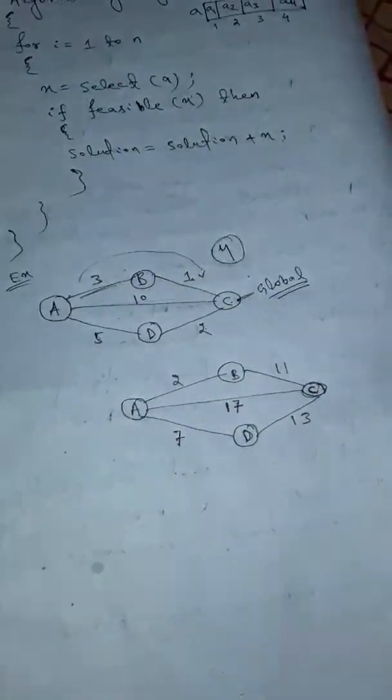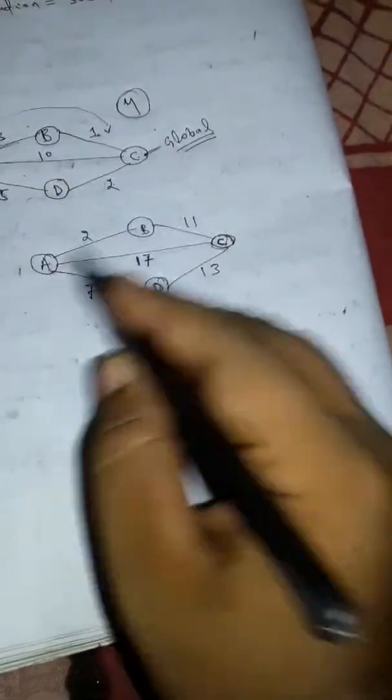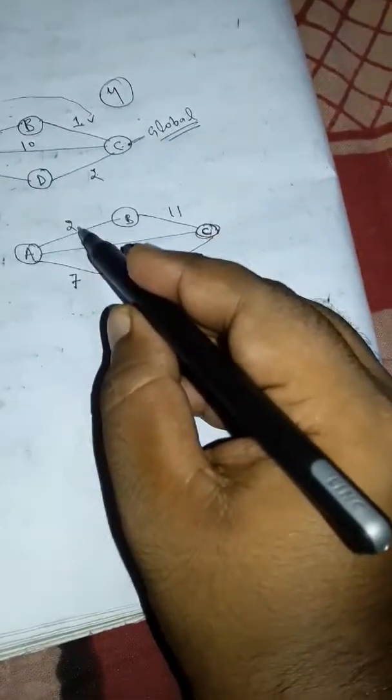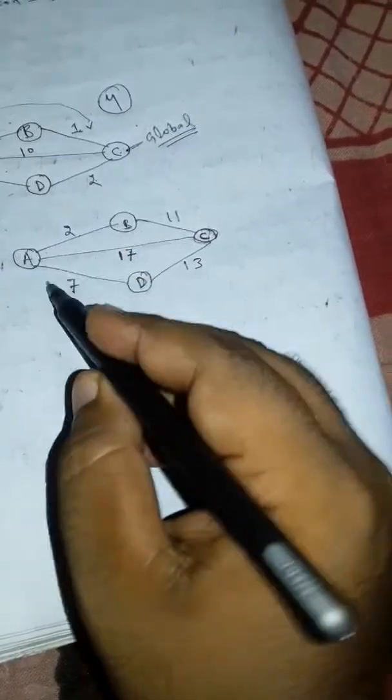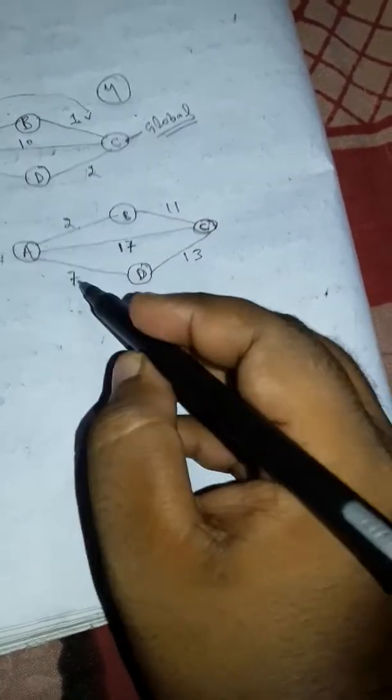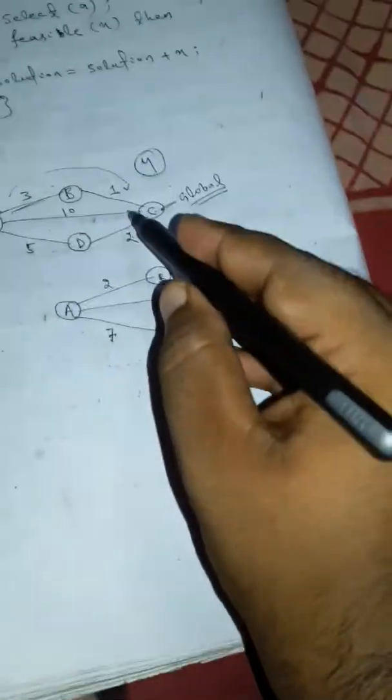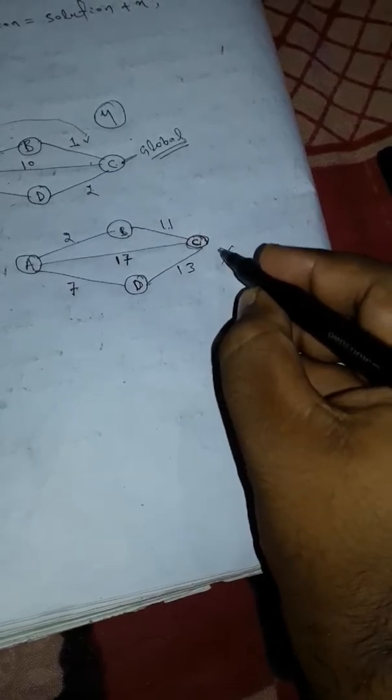But this condition is not applicable in all problems. Like this problem, we have to reach from A to C. A to C direct edge weight is 17, A to D is 7, B to C is 11, and D to C is 13. So this condition is not equal, so here the greedy approach or greedy technique will not be applied.